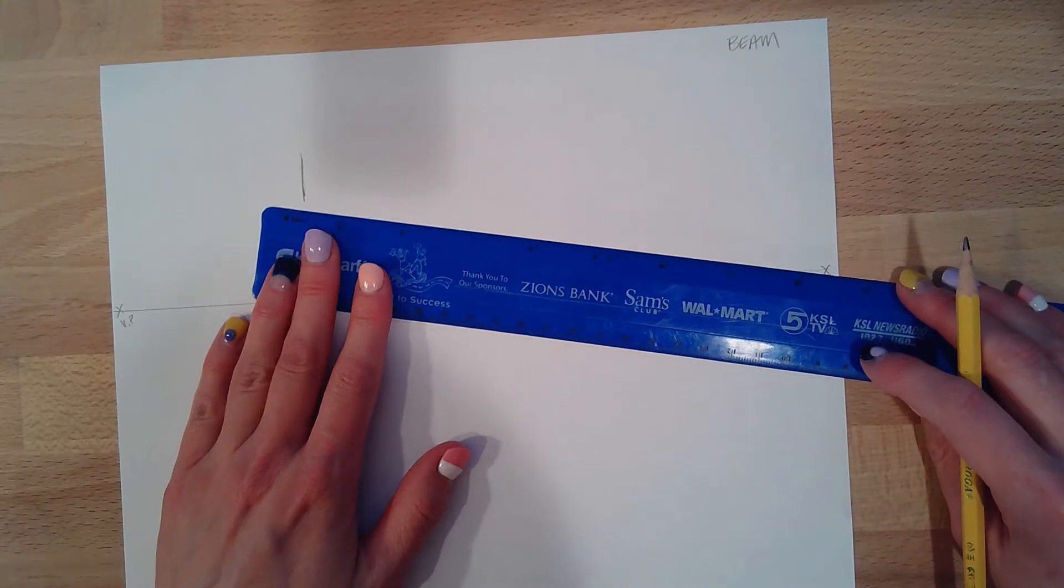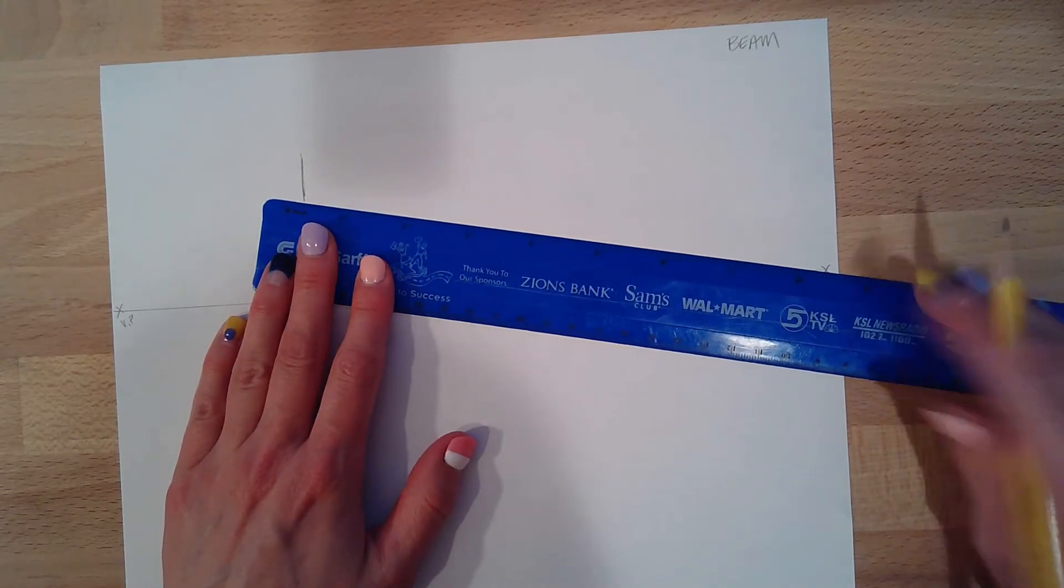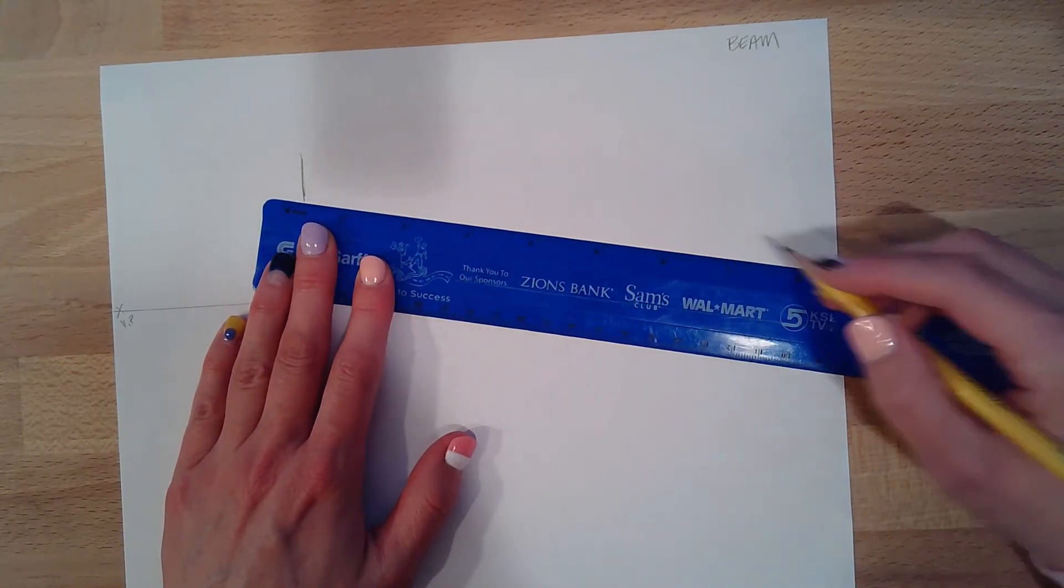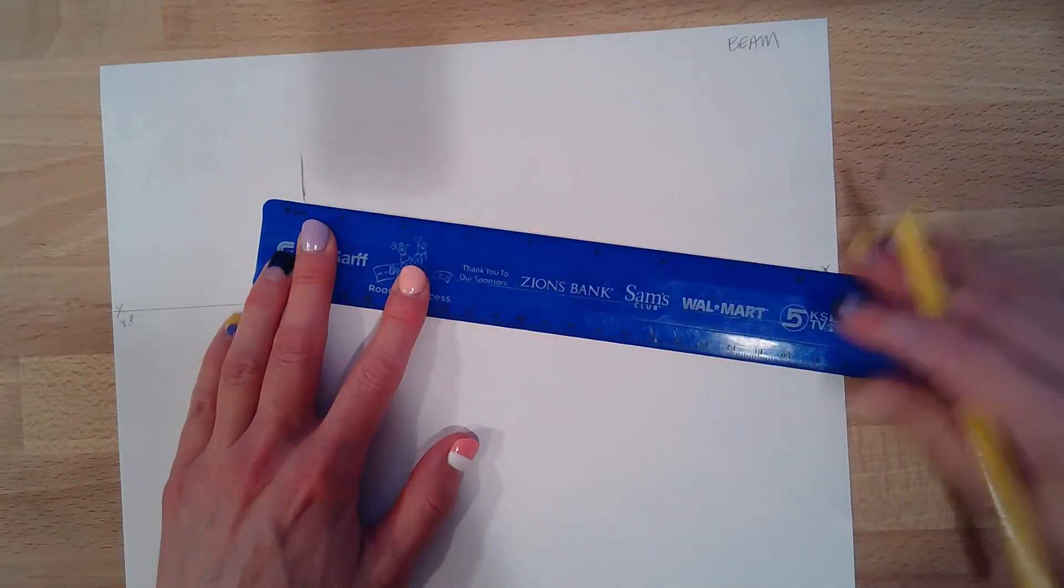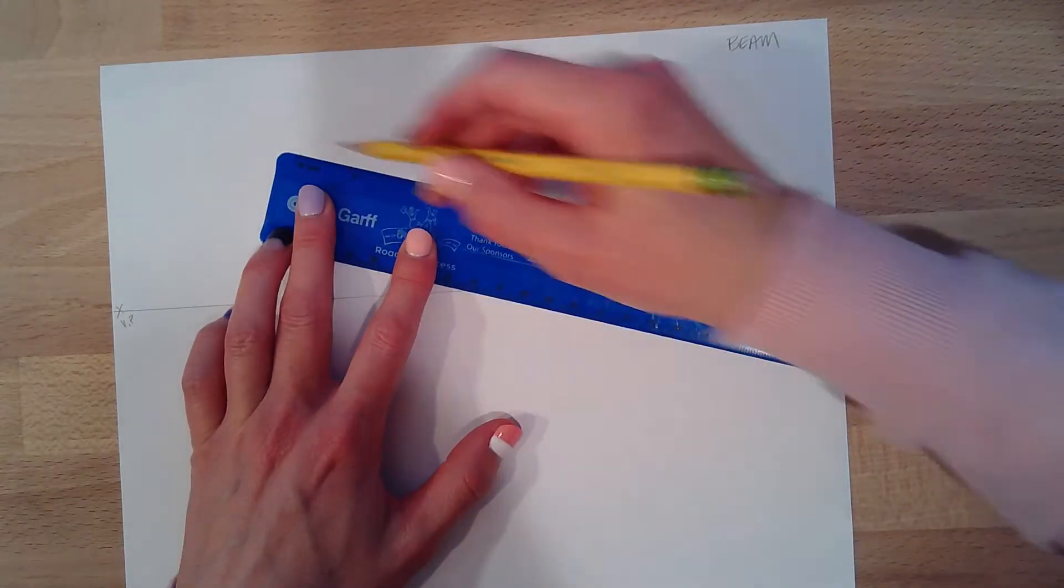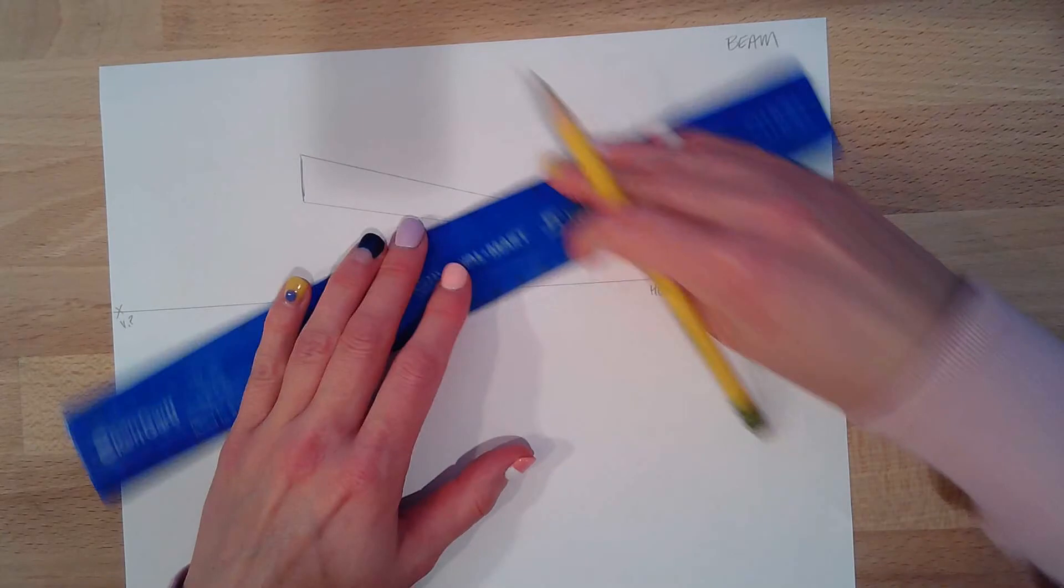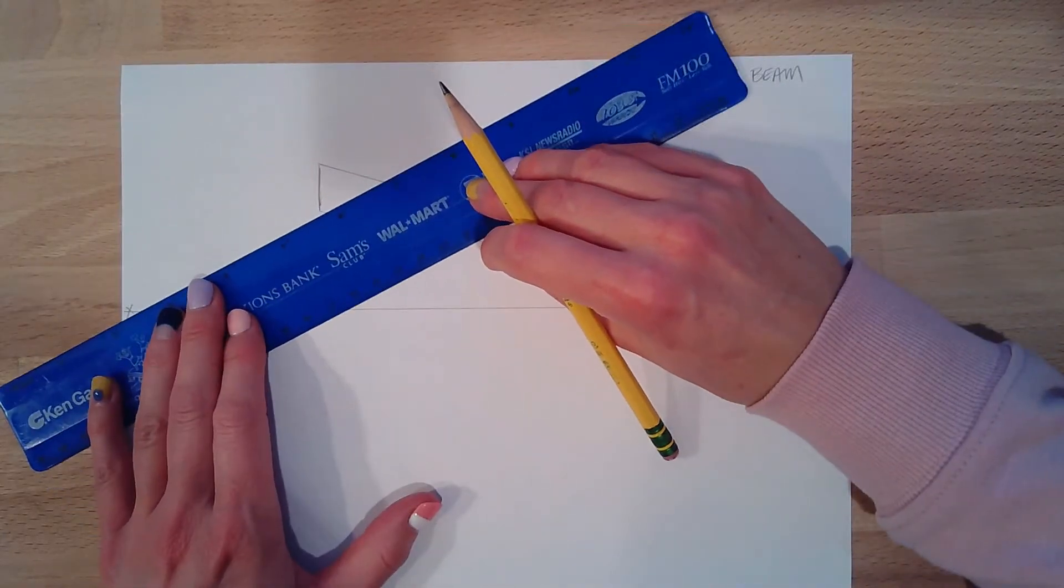Then what I'm going to do is what I did before. Let's draw my center, my vanishing point. Just like I would with the box, I'm going to go from my top of my vertical line to the vanishing point, and I'm going to go to this vanishing point on the other side.